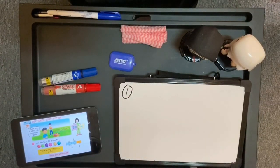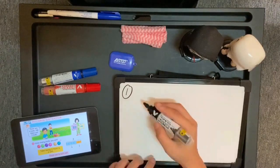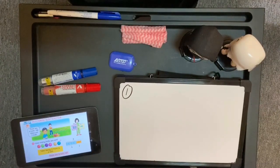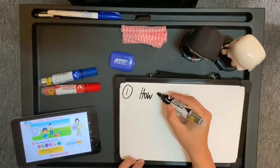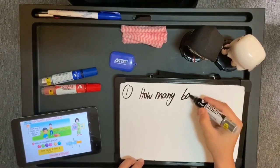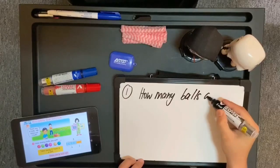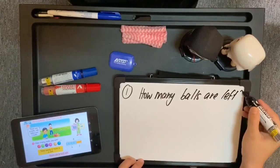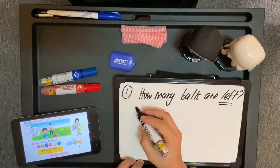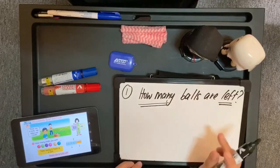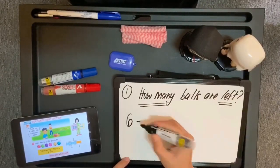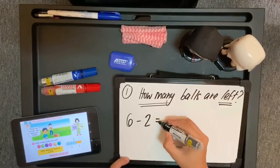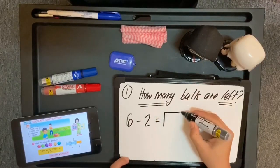There are 6 balls, Nick takes out 2 balls. Di bola ada 6, dikeluarkan 2. How many balls are left? Berapa yang tinggal? Matematik dia adalah 6, dibuang 2, tolak 2, sama dengan 2.